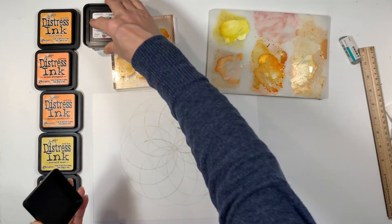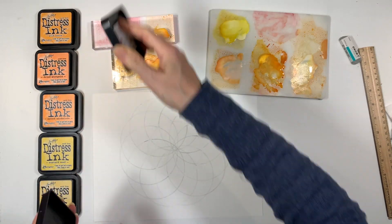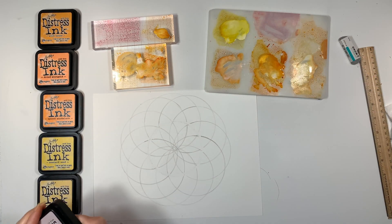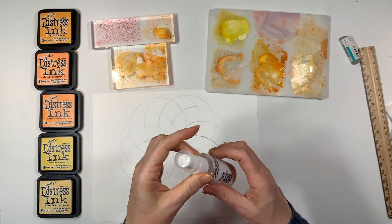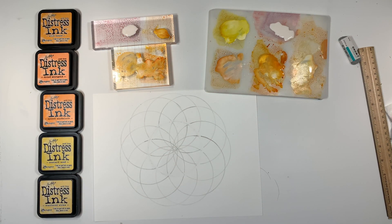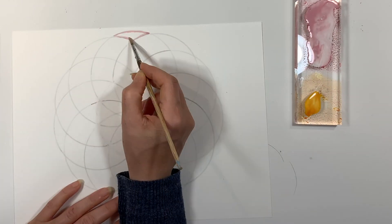So I'm going to use my distress inks - these are ink pads that we're going to be using as watercolors. I'm just going to squish them down onto my non-porous surface and add some shimmer from Heidi Swapp, and then we're going to get started with watercoloring this design.